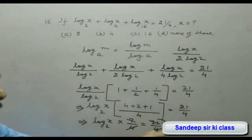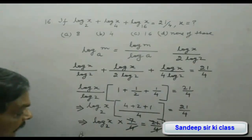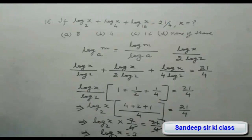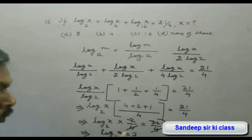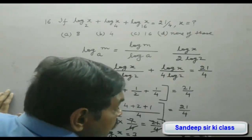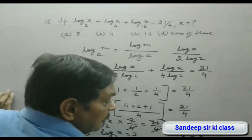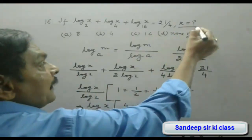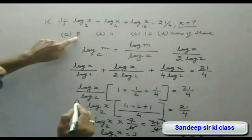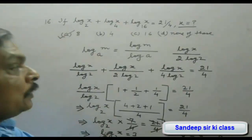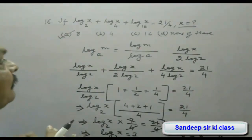We find that log x to the base 2 equals 3. By the definition of logarithm, x equals 2 to the power 3, which equals 8. So option A is correct — the answer is x = 8. We can also verify from the options.